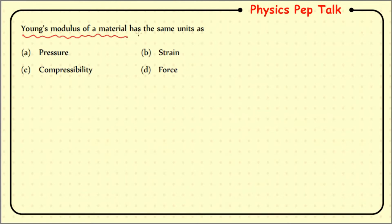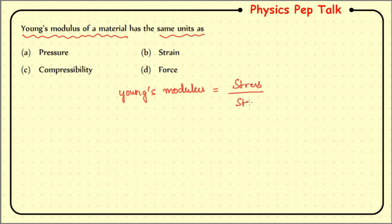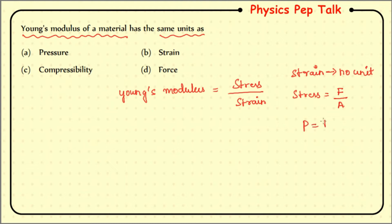Next question: Young's modulus of a material has the same unit as? Young's modulus is equal to stress divided by strain. Strain is defined as change in dimension divided by original dimension, so strain has no unit. Stress is defined as force divided by area, which is the same as pressure. Therefore Young's modulus has the same unit as pressure, which is the correct answer.